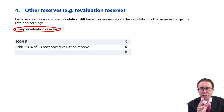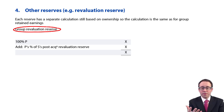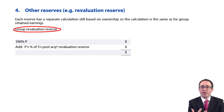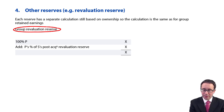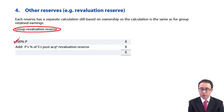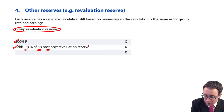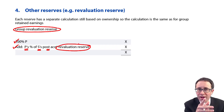It's within equity, so it's based upon exactly the same principles as where we see your group retained earnings. It's just another reserve. Our retained earnings for the group were 100% of the parent plus P's share of S's post-acquisition retained earnings. Well, here you take 100% of the parent's revaluation reserve, and then you just add on P's share of S's post-acquisition revaluation reserve.